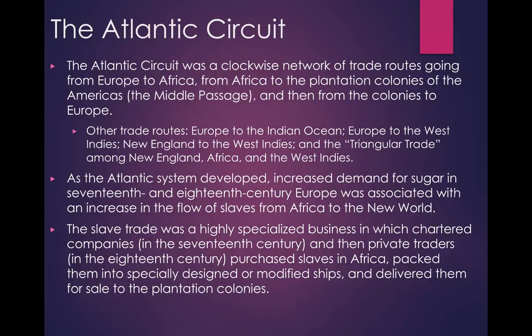The Atlantic Circuit was supplemented by a number of other trade routes: Europe to the Indian Ocean, Europe to the West Indies, New England to the West Indies, and the triangular trade among New England, Africa, and the West Indies. As the Atlantic system developed, increased demand for sugar in 17th and 18th century Europe was associated with an increase in the flow of slaves from Africa to the New World. Part of the reason why the demand for sugar went up was the creation of the coffee trade — coffee tastes a lot better when you add sugar to it.